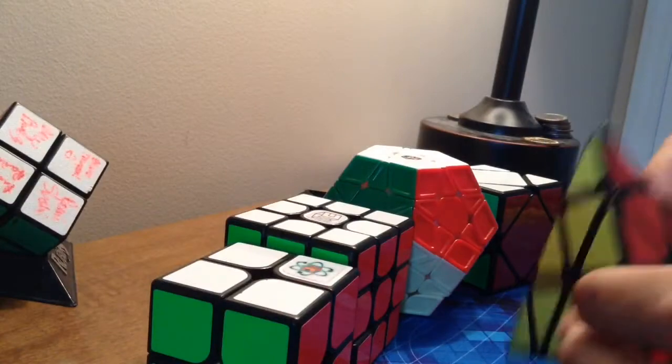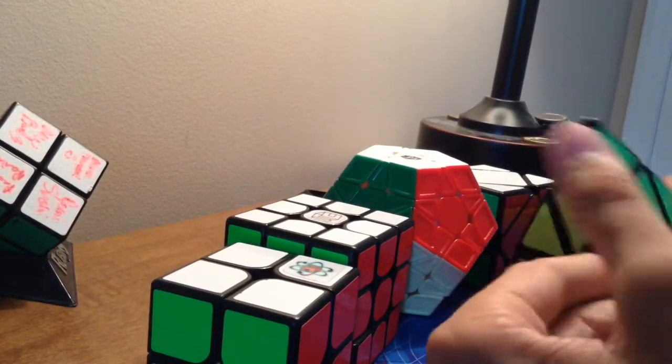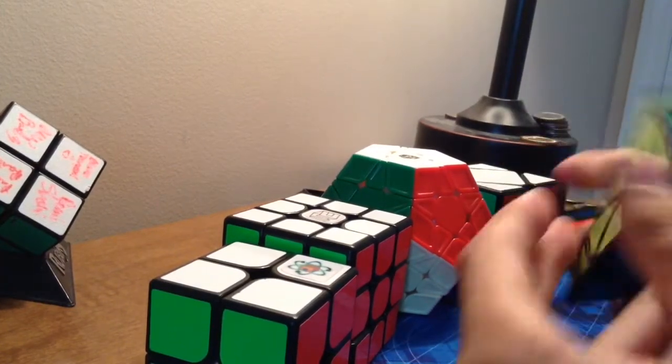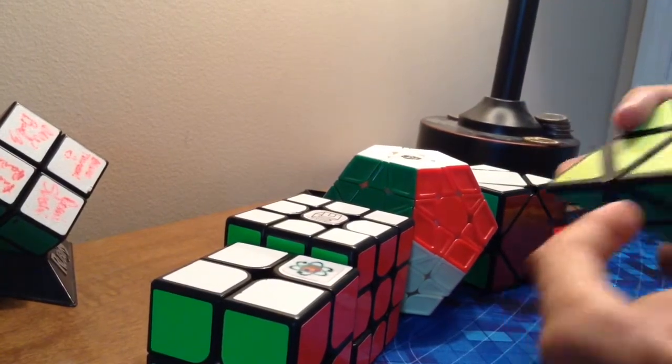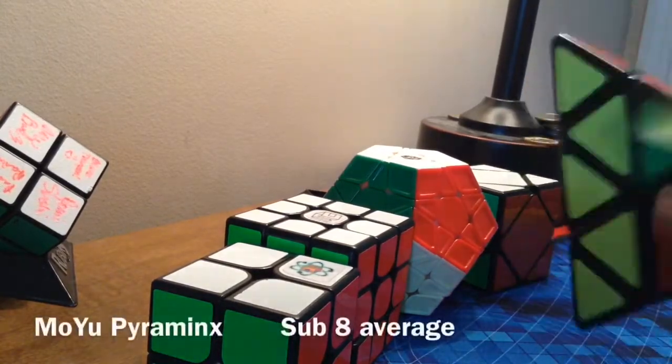So for Pyraminx, which is the event probably I care the least about, I am hoping for probably a sub-8.5 average. That would be good. I'd be fine with that. Maybe a sub-7 single.